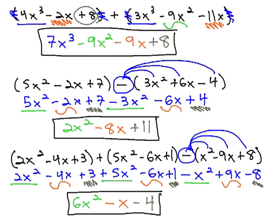Adding and subtracting polynomials simply requires distributing any negatives, and then combining like terms. Here we go.